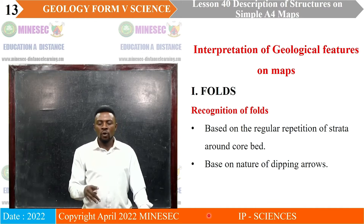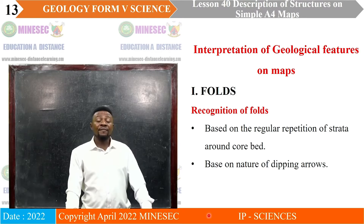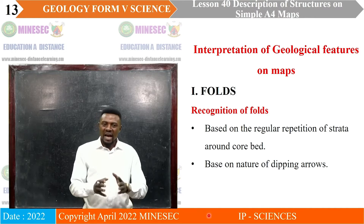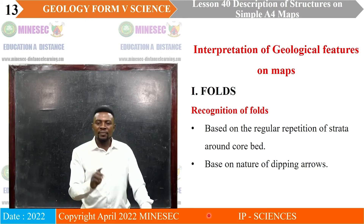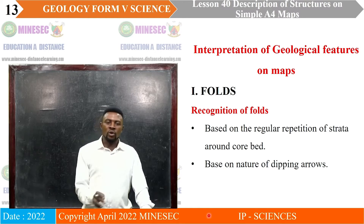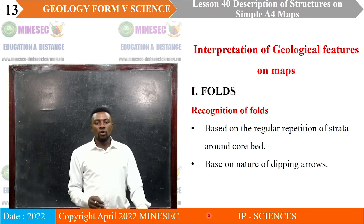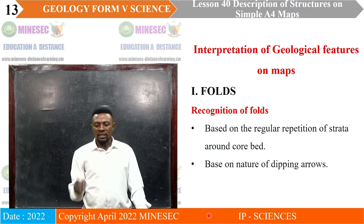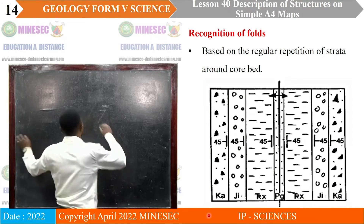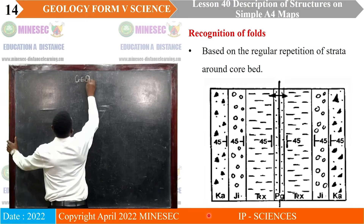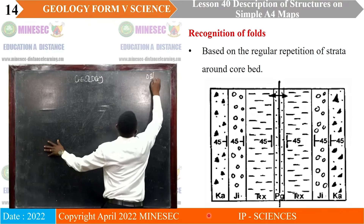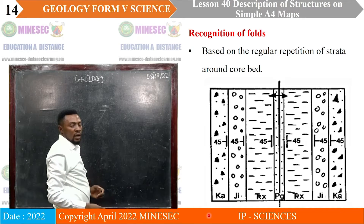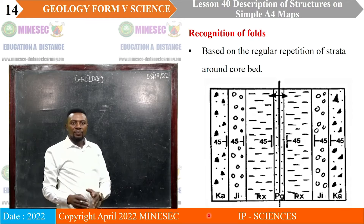How do I recognize faults on a map? The very first method — take note — is the regular repetition of strata around a core bed. And the second method is based on the nature of dipping arrows. Let's start with the first one: regular repetition of strata around a core bed.